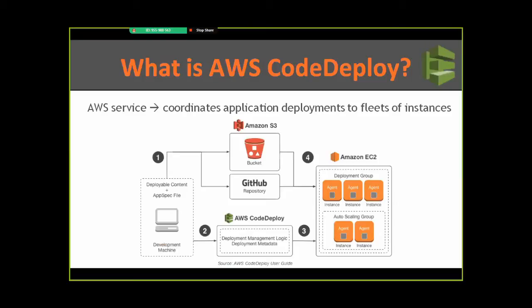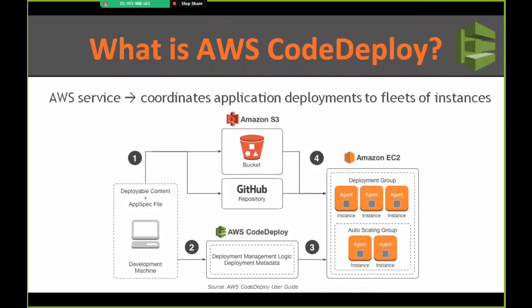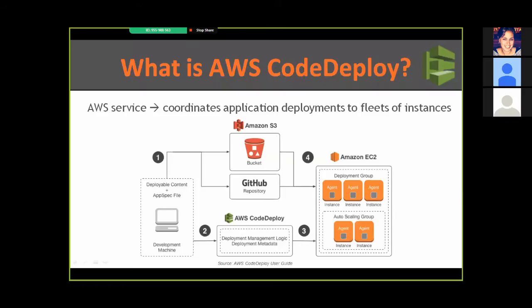Now some words on CodeDeploy. This is not meant to be a beginner's training, but rather an introduction or reminder so everyone has a minimum level of knowledge. By definition, Amazon CodeDeploy is an AWS service which helps coordinate application deployments to groups of instances — which can be EC2 instances, on-premises instances, or even auto-scaling groups. CodeDeploy aims at answering three questions: what we want to deploy, where to deploy, and how.